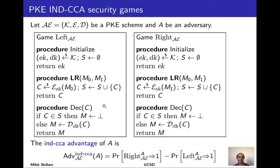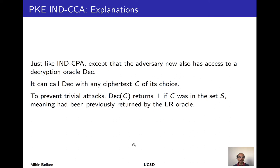The IND-CCA advantage is defined just like IND-CPA: the difference in probabilities that the adversary returns 1 in the left and right worlds. To restate: it's just like IND-CPA except there's this new decryption oracle, which can be called on any ciphertext of the adversary's choice, except the oracle refuses to decrypt any ciphertext previously returned by the left-or-right oracle.